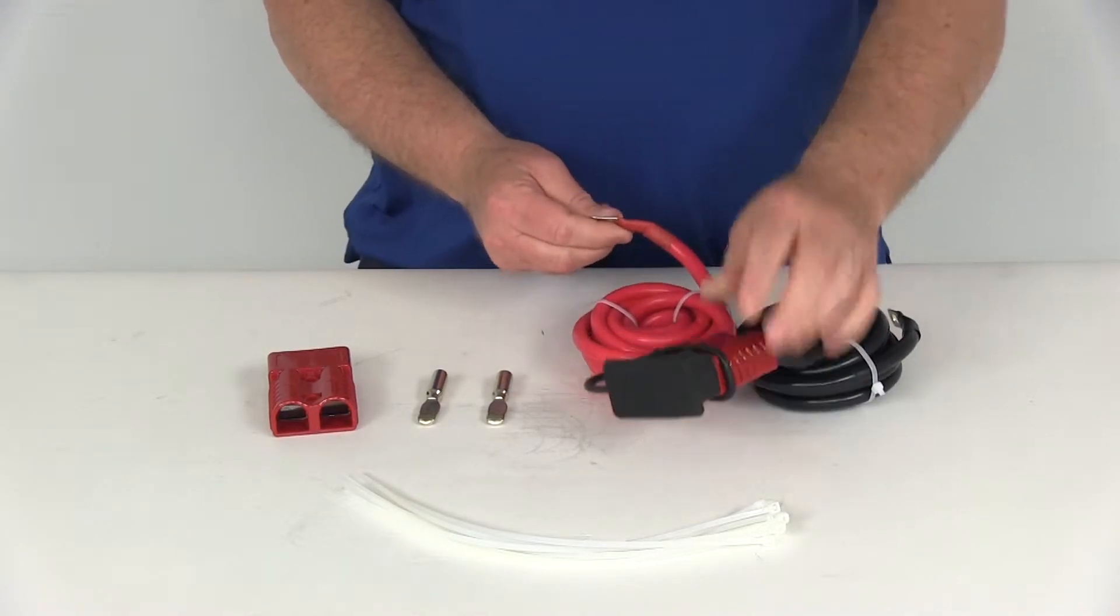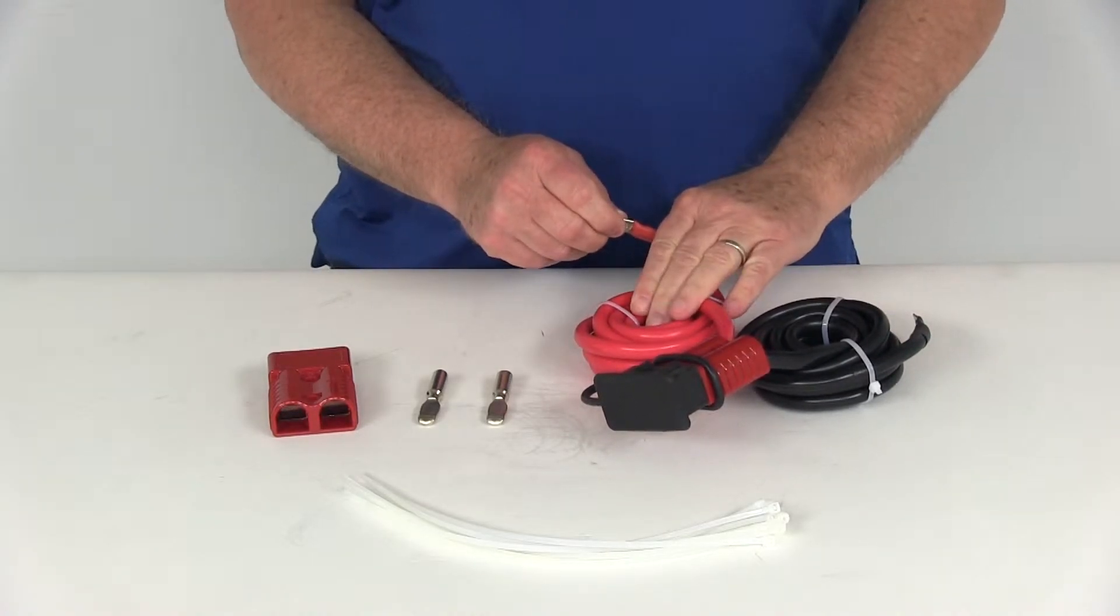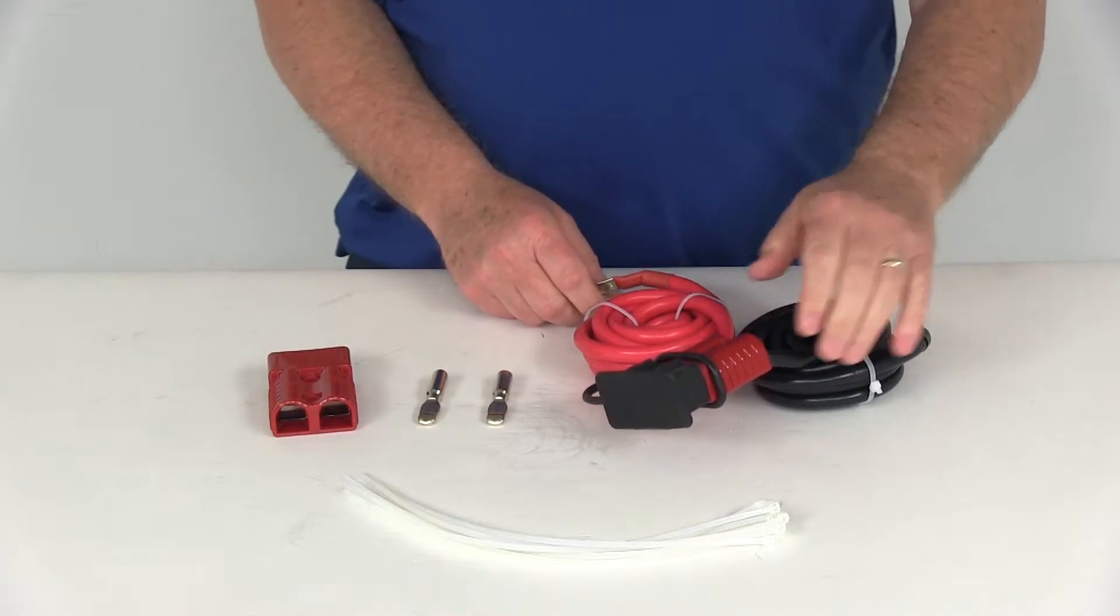They do come with the looped ends, the connector right here on each end attached to your battery. The red would go to your positive post, black would go to your negative post.